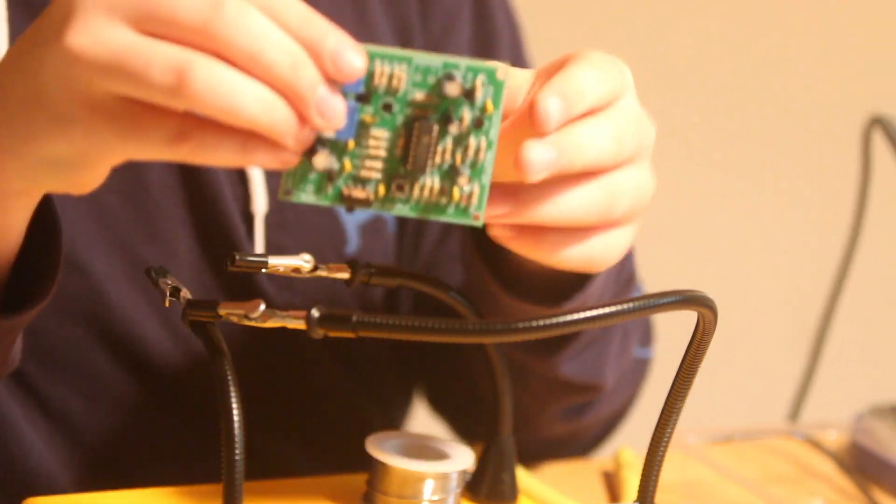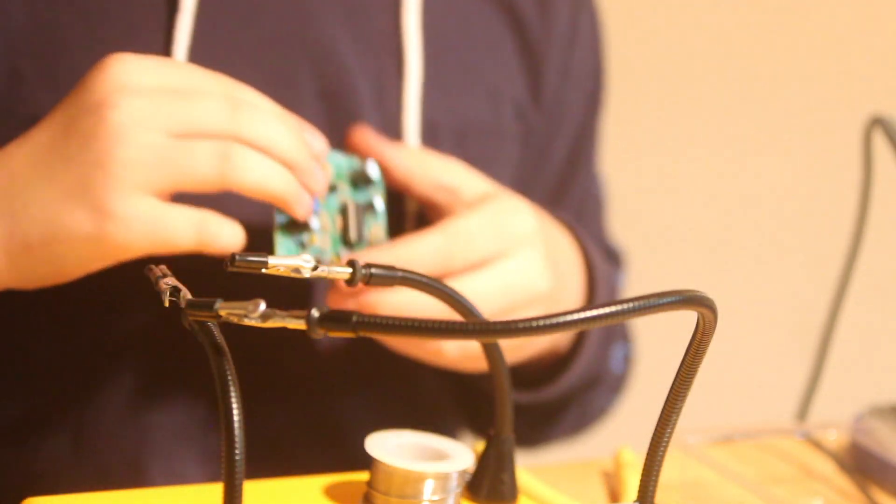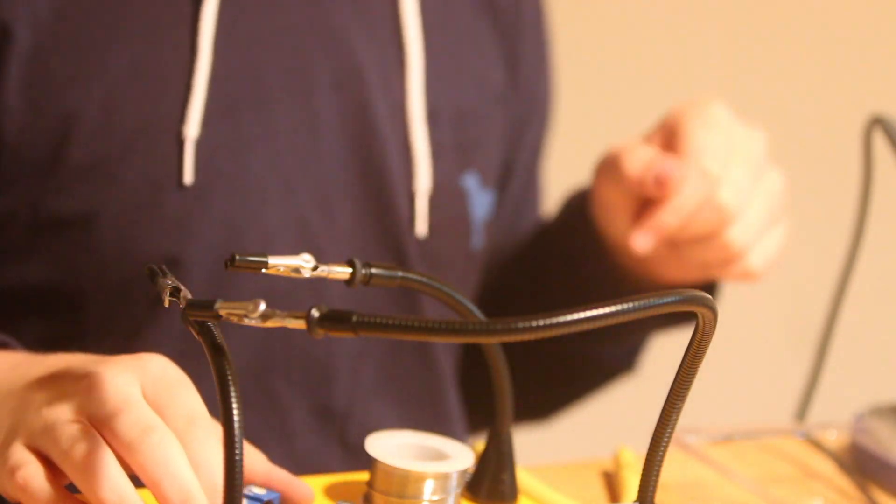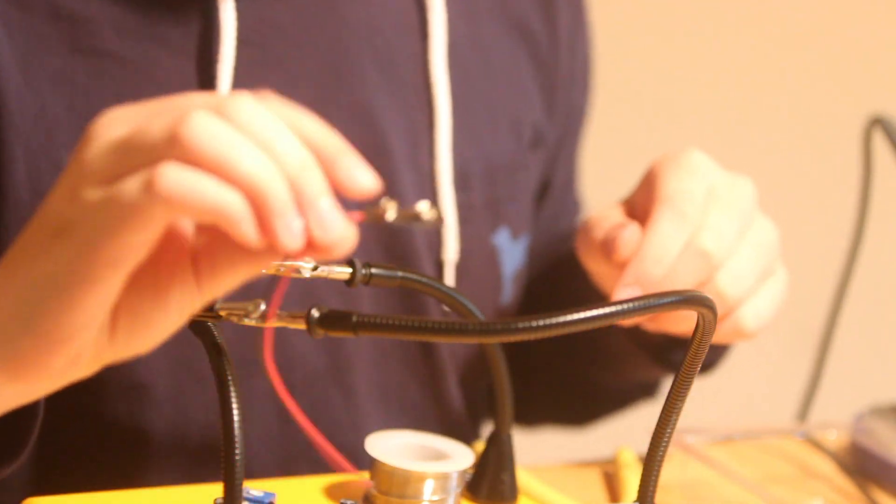All right, now the IC is in, or the little socket part. And I believe now what we have to do is attach the 9-volt battery jack.